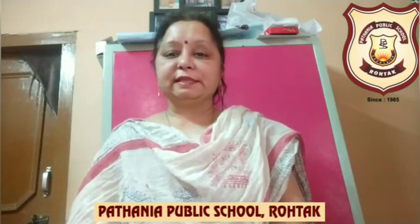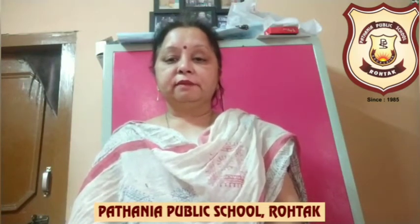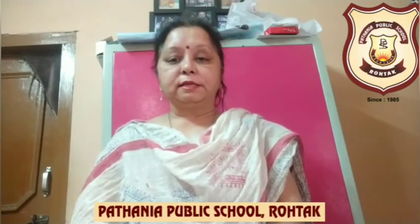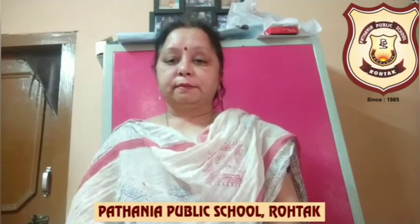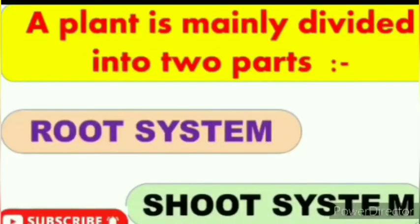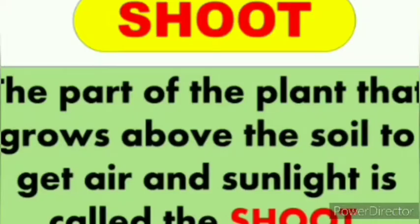Good morning students, welcome to science class. In the previous class we started Lesson 3: Plants and its Parts, where we discussed the root. Today we are going to discuss the next part of the plant — the stem. As you know, a plant is divided into two parts: the shoot system and the root system. We have already discussed the root system, and now today we will discuss the shoot system.